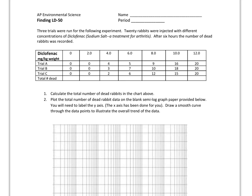Number one says calculate the total number of dead rabbits in the chart above. We're going to add up the columns — trial A, B, and C together. Zero plus zero plus zero is zero, and the next concentration is also zero. At four milligrams per kilogram of weight, we add four, three, and two to get nine.